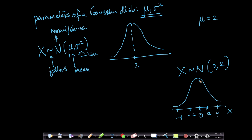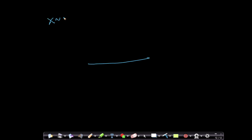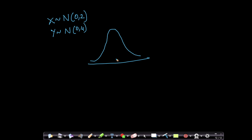The peak of the bell shape is always at mu. Suppose I have two random variables: x with a mean of 0 and a variance of 2, and y with a mean of 0 but a variance of 4. Then x looks like a thinner bell, while y would be fatter and shorter because y has higher variance than x. Variance basically talks about spread.